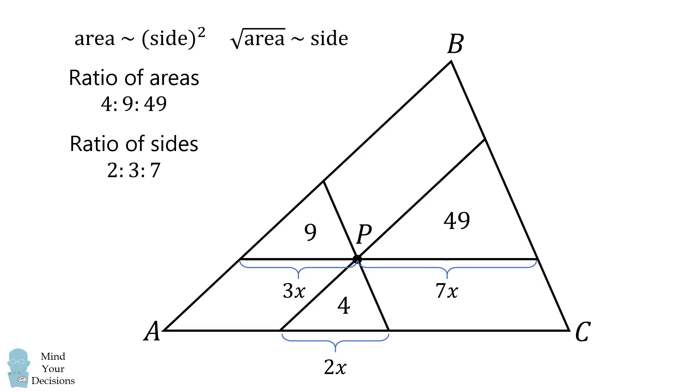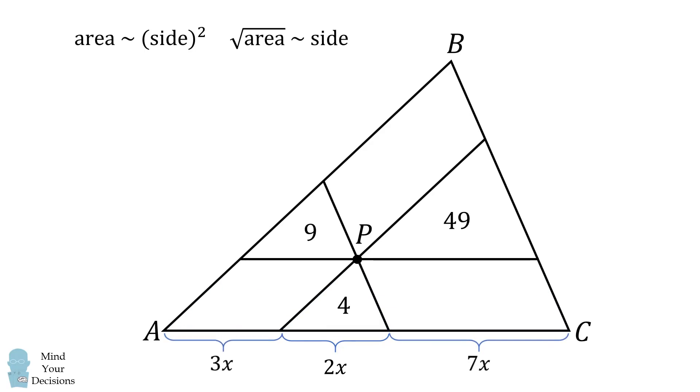Because all sides are parallel, we have parallelograms, and these lengths will be equal to each other. Consequently, we can calculate that AC will have a length that's equal to 12x.